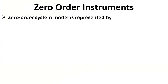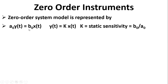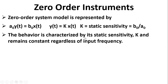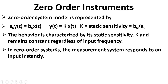For zero order instruments, the model is represented by: a₀ · y(t) = b₀ · x(t). So y(t)/x(t) = b₀/a₀, which is the static sensitivity. Output divided by input equals b₀/a₀ — we normally take this as the static sensitivity, meaning change in output by change in input. This behavior is characterized by its static sensitivity k.